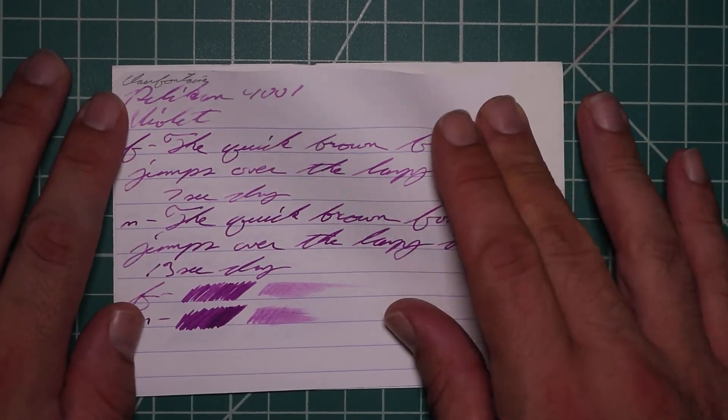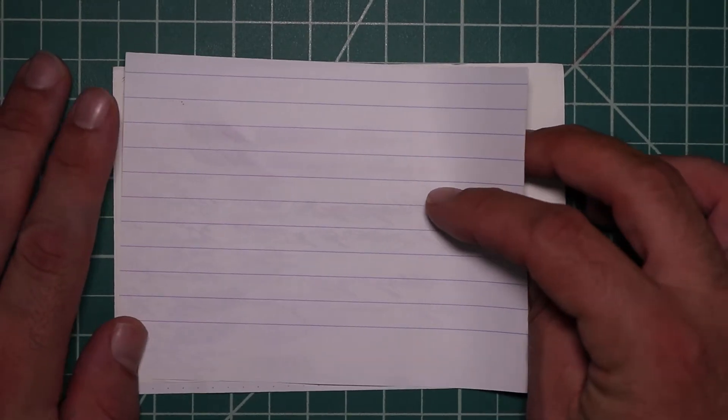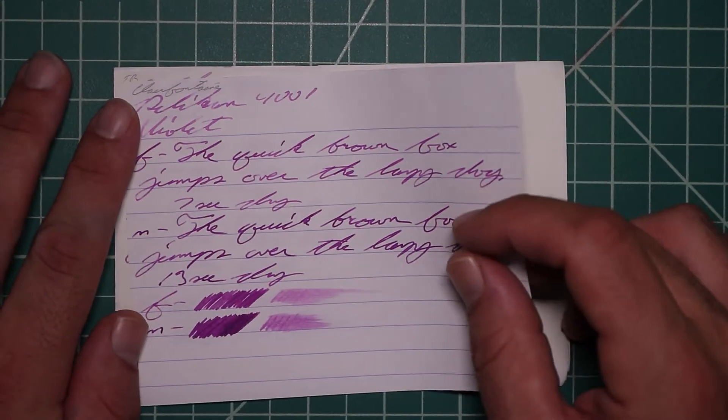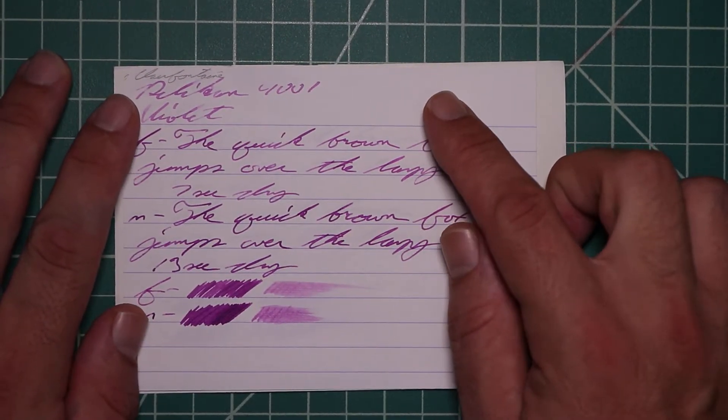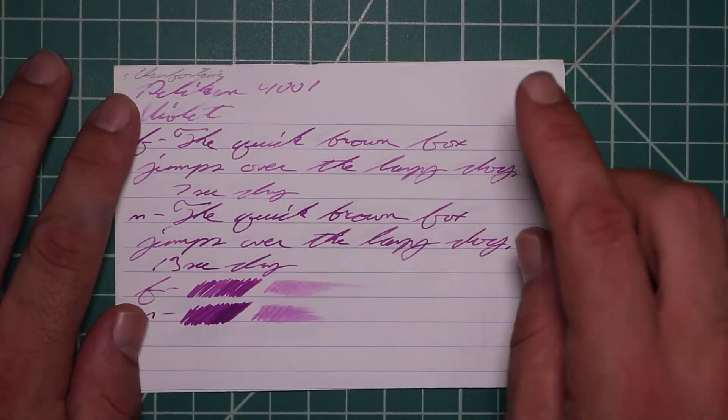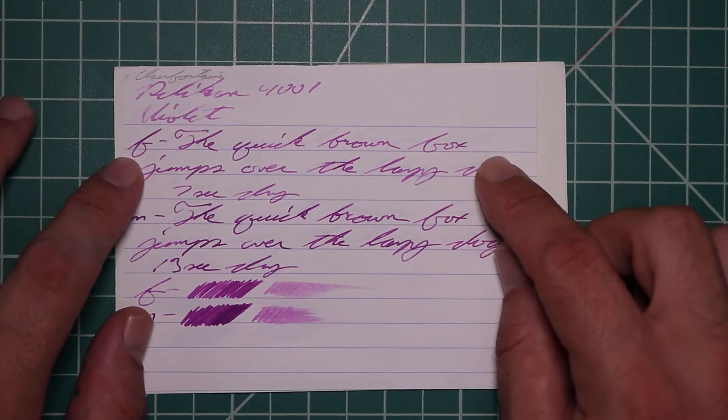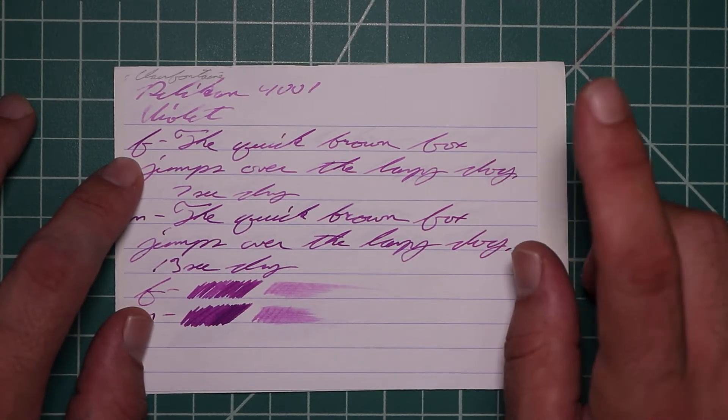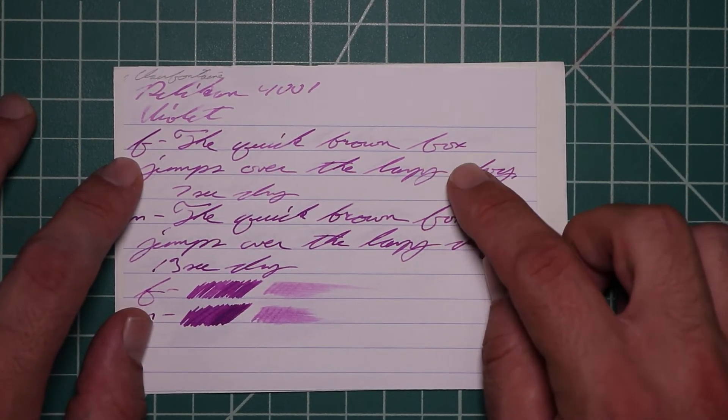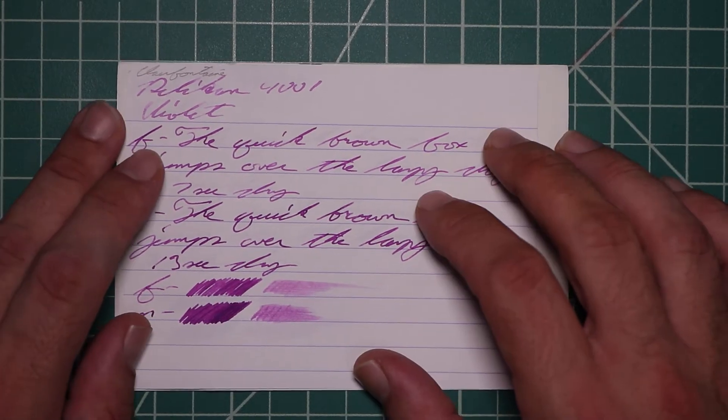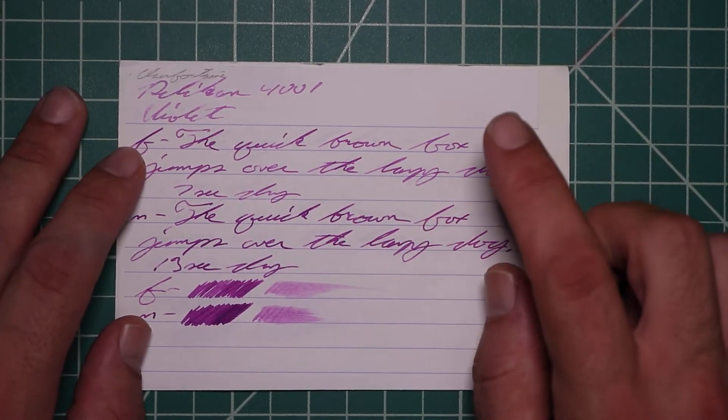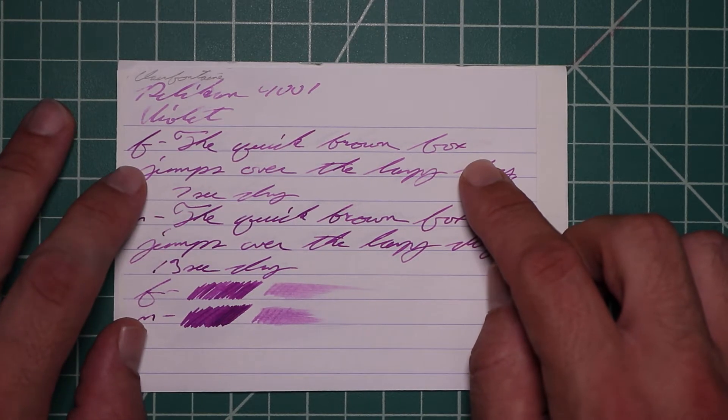Let's take a look at the Clairefontaine. No bleeding, no ghosting. The 1.1 is no feather spread, halo sheen. It does offer a lot of shading throughout. Extra fine is darker than the stub with no feather spread, halo sheen. And again, a ton of shading throughout this. It's, I think, the most shading I've seen the 4001 inks have. It's very nice. Four seconds to dry.